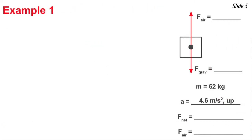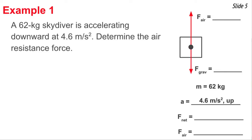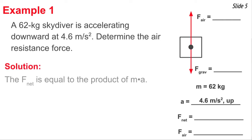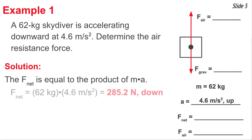In our first example, we wish to find all the blanks in the diagram. We know the values of m and A. As a word problem it reads: a 62 kilogram skydiver is accelerating downward at 4.6 meters per second squared — determine the air resistance force. Our solution involves using the values of m and A to first calculate the net force, which comes out to 285.2 Newtons downward.